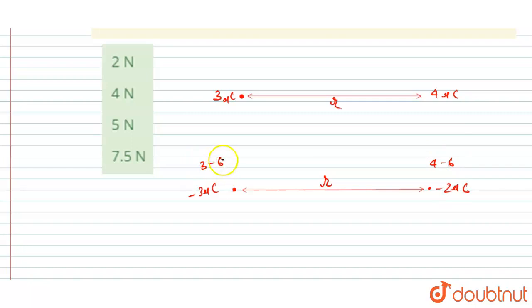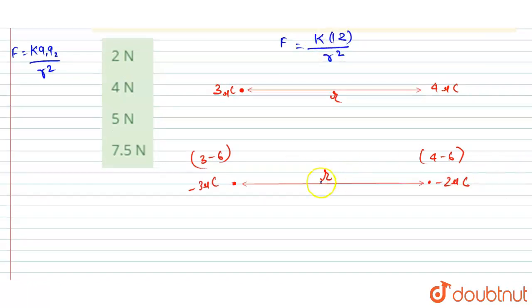So now initially the force was—force can be found by using this formula, that is k*q1*q2/r². So here q1*q2 is 12, so I will write k*12/r².